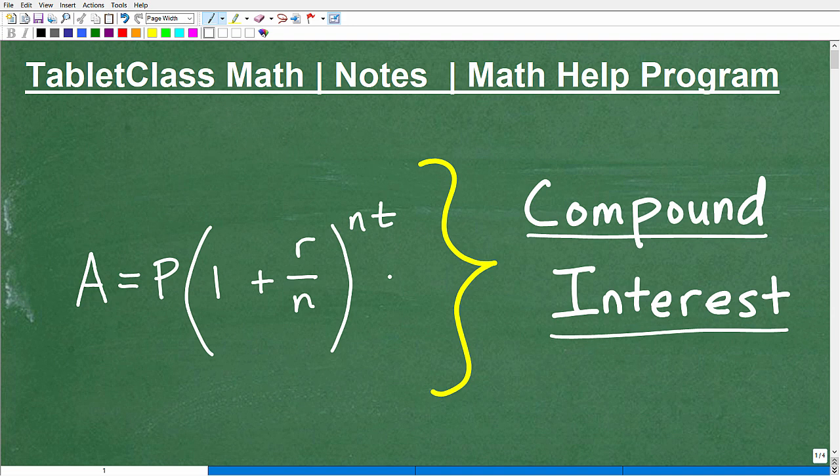Compound interest has to do with this concept of interest, which is a financial concept. If you start off with a particular amount at a bank, you invest a particular amount in a savings account, and that bank is going to give you a particular interest. That money is going to grow over time into something larger. This is the concept of earning interest.